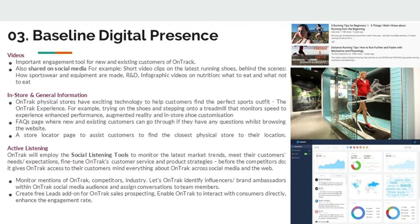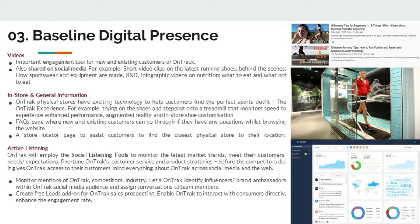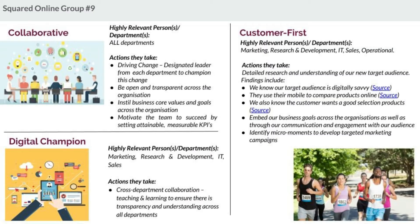The use of exciting technology found in physical stores gives customers the ultimate On Track experience. Social listening tools help On Track gain and act on insights. Every department plays a role to share research information, highlight digital benefits such as capturing data on customers and greater brand awareness, and demonstrate how we can use customer signals to influence purchase. It is important for organizations to try new things to attract new members, with key leads in each department driving transparent changes with clear goals.